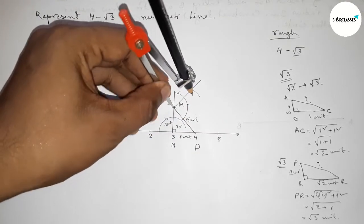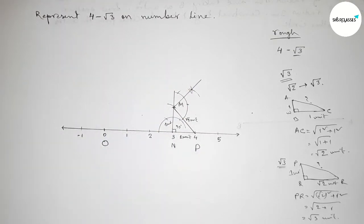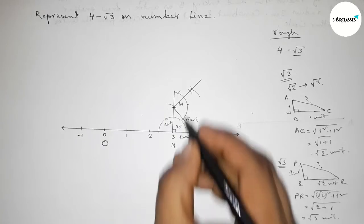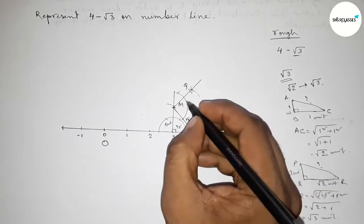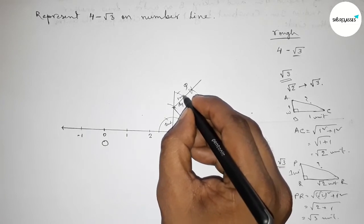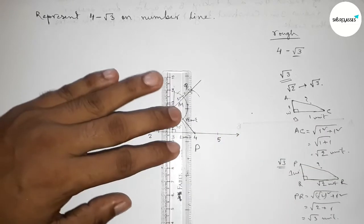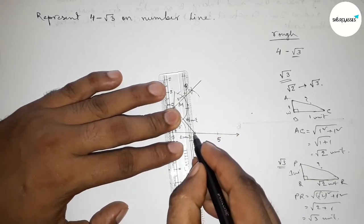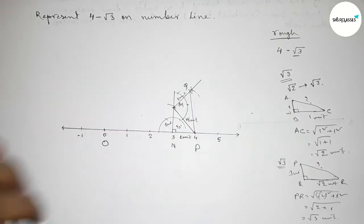Taking one unit length using the compass — the distance between 0 to 1 — and placing the compass and cutting to mark point Q. This side is 1 unit length, and now joining P and Q.